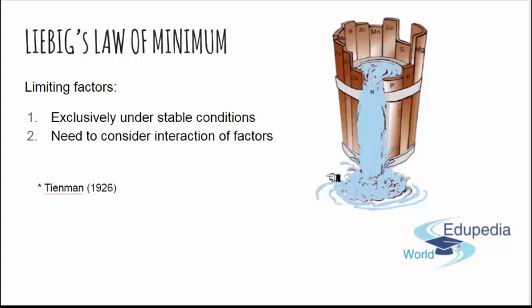There is a slight modification of Liebig's Law that Taiman in 1926 introduced. He said that for the function of an organism, the most important ecological factor is the one the organism has the lowest valence for — and that is specific for the growing stadium that is most sensitive. For example, in humans that would be kids, needing healthy teeth and a lot of calcium.